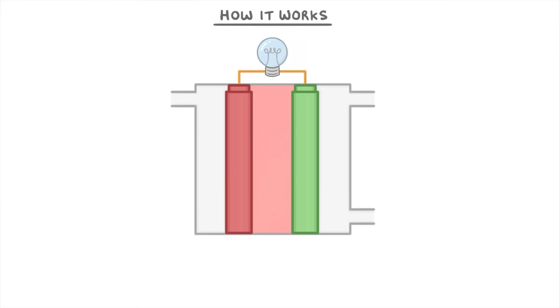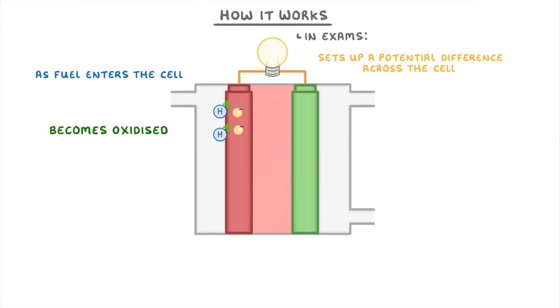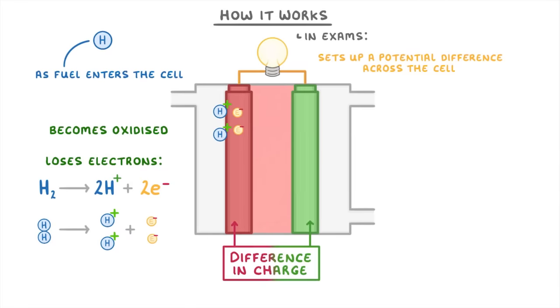To make things clear, if you're asked how fuel cells work in exams, the key thing to mention is that as fuel enters the cell, it becomes oxidized, and this sets up a potential difference across the cell. If we break this down, the fuel in this case is the hydrogen. And by oxidized, we just mean that the hydrogen atoms lose electrons. Then the potential difference part just means that there's a difference in charge between the two electrodes. And this is what drives the electrons around the circuit so that we can generate electricity.